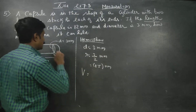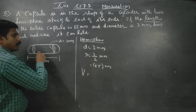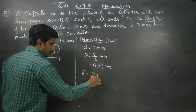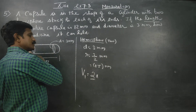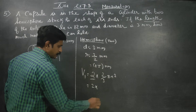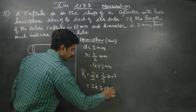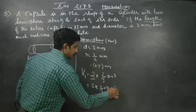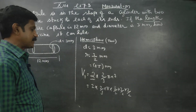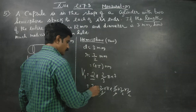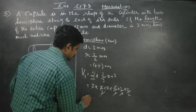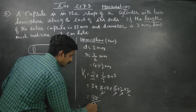I am going to find the volume of the two hemispheres as V1. The formula is 2 into 2/3 π r³. Substituting r = 3/2: 2 into 2/3 into π into (3/2)³. After cancellation, the answer is 9π/2. So V1 = 9π/2.